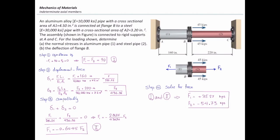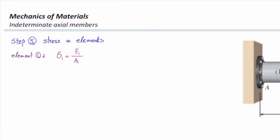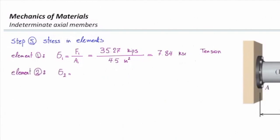Now let's do the easy part: determining stress and deflection. Stress in element one equals F1 divided by A1: 35.27 kips divided by 4.5 square inches gives 7.84 KSI, positive meaning tension. For element two, sigma two equals F2 divided by A2: negative 54.73 kips divided by 3.2 square inches gives negative 17.1 KSI, and the negative sign indicates compressive stress.